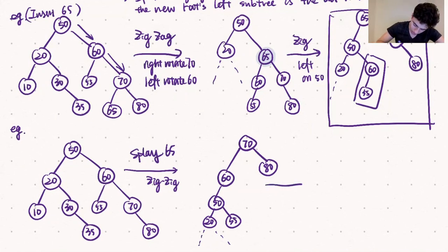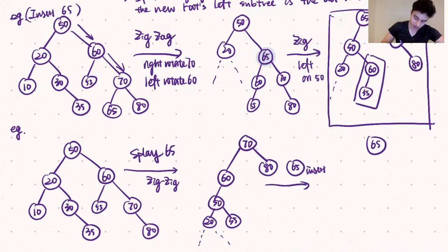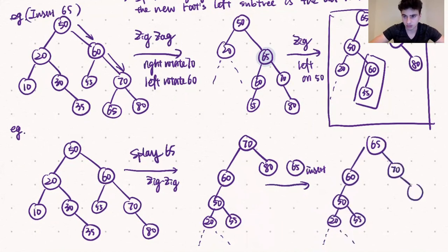Since 65 is smaller than 70, we break off 70's left child, make 65 the root of our tree, make the subtree rooted at 70 its right child, and make the subtree rooted at 60 its left child. As you'll notice, the resulting tree is different from the result of the bottom-up splay insertion.